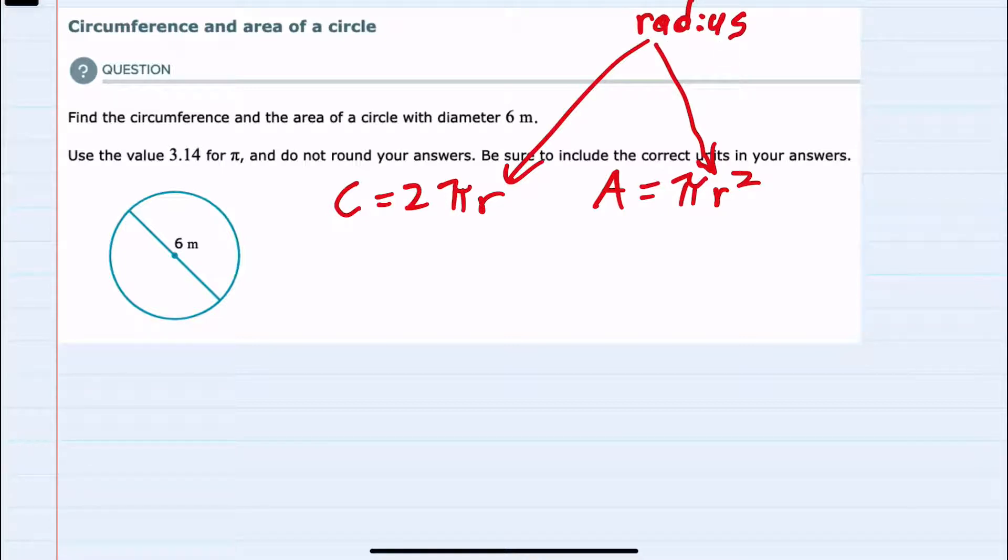From this example, we're given the diameter, but we can easily see that the radius would just be half of that diameter.